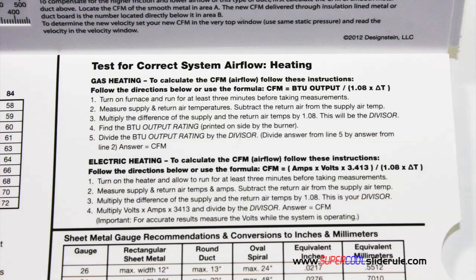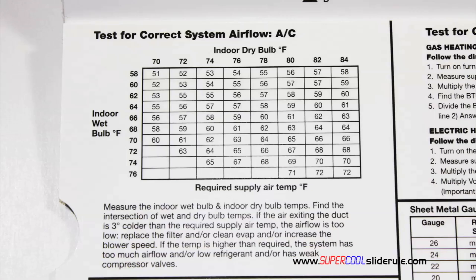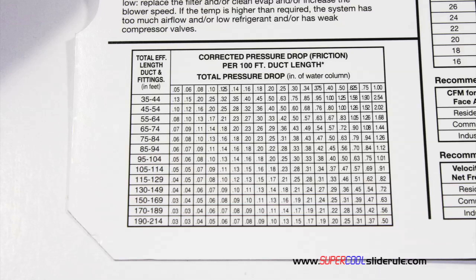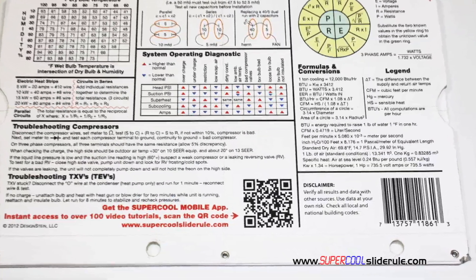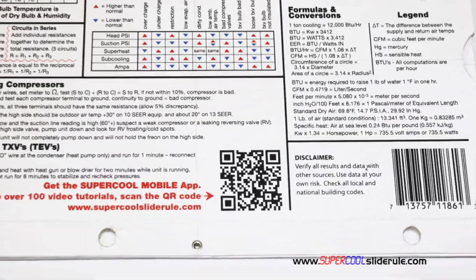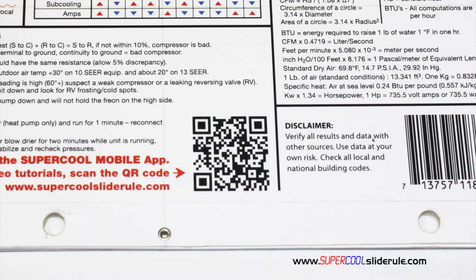It has step-by-step directions for determining airflow through a gas furnace, electric furnace, or an air conditioning unit. It has pressure drop multipliers for ductwork, as well as recommended velocities. And finally, the scanning of this QR code gives instant access to over 100 tutorials to assist the technician with every test and repair imaginable.